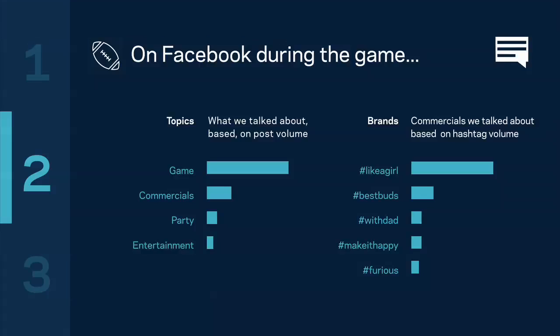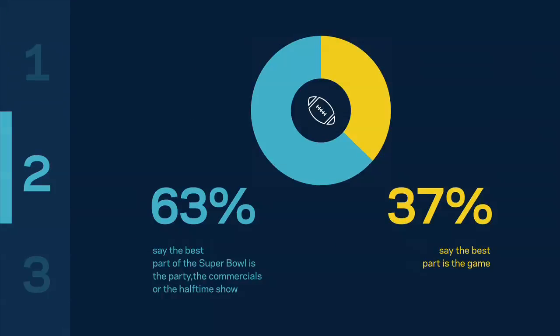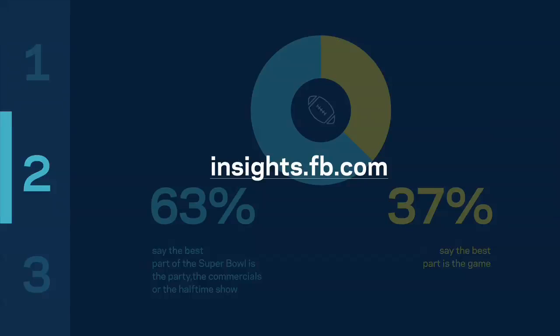My second example is for Super Bowl fans. Here you can see the top topics and top brands based on post and hashtag volume on Facebook during the big game. By running analytics, we found that just slightly less than two-thirds of our users thought the best part of the game was the commercials, the party, and the halftime show. For more infographics on recent events like this one, you can find them on insights.fb.com. These infographics are derived using our data infrastructure platform.